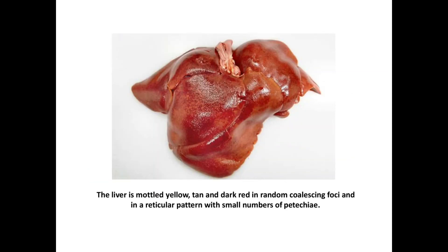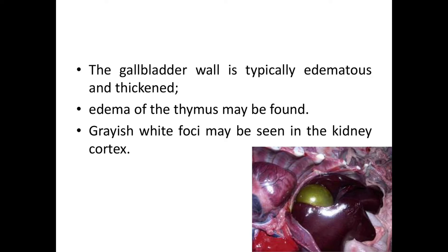Here you can see a picture of a liver from a dog infected with CAV1. The liver shows mottled yellow, tan, and dark red coalescing foci in a reticular pattern with a small number of petechiae. Size can be normal or swollen. The gallbladder is typically edematous and thickened, and edema of the thymus may also be found. Grayish-white foci may be seen in the kidney cortex.